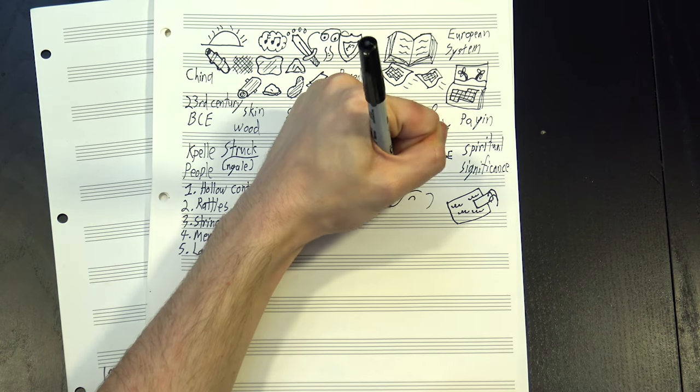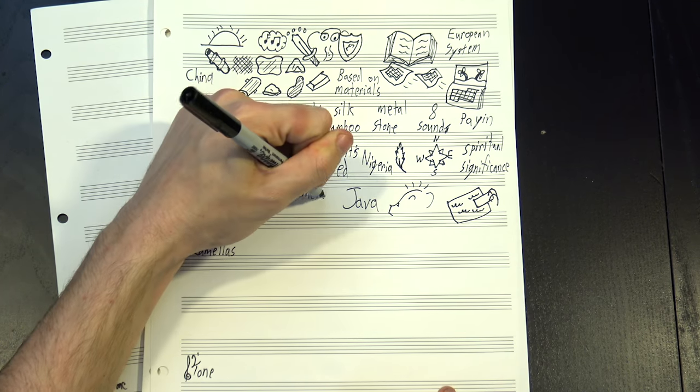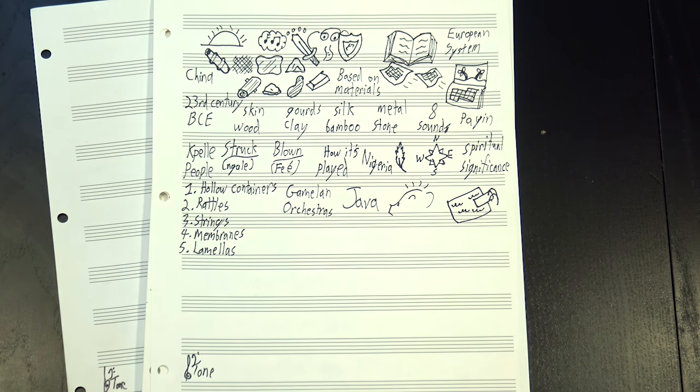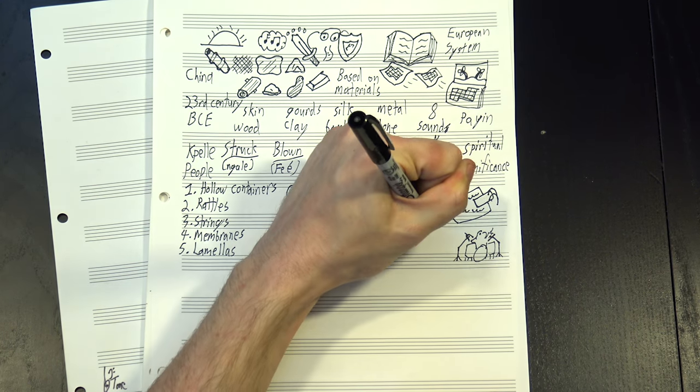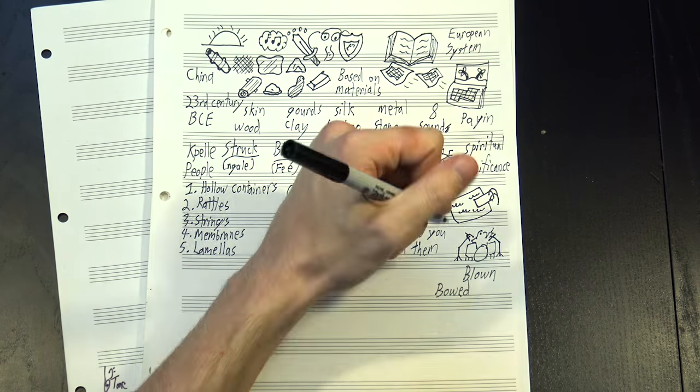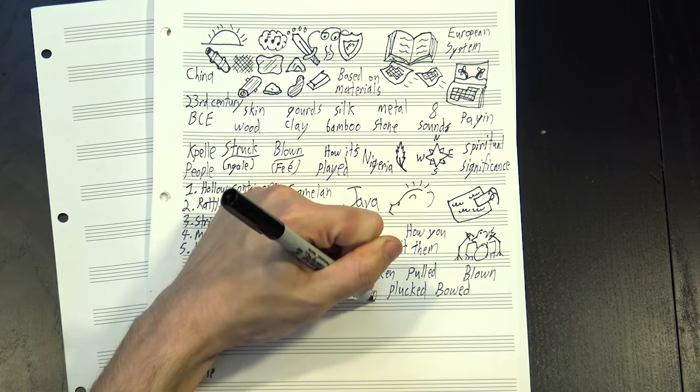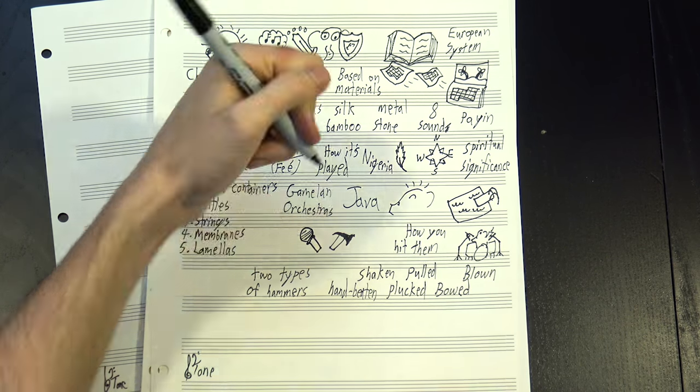But perhaps the most interesting system I've seen was the one invented on the island of Java. Javanese art music is dominated by gamelan orchestras, and gamelan orchestras are almost entirely percussion, so the best way to divide them up is by how exactly you hit them. They have a category for blown instruments and one for bowed ones, then pulled, plucked, shaken, hand-beaten, and two different categories for hammered instruments based on the shape of the hammer, which I think is incredible.